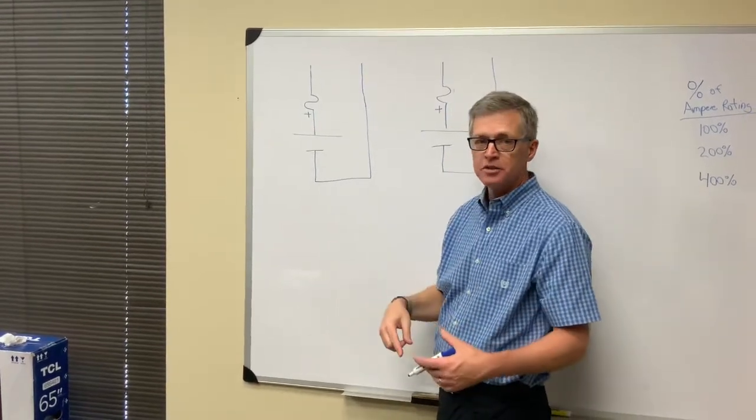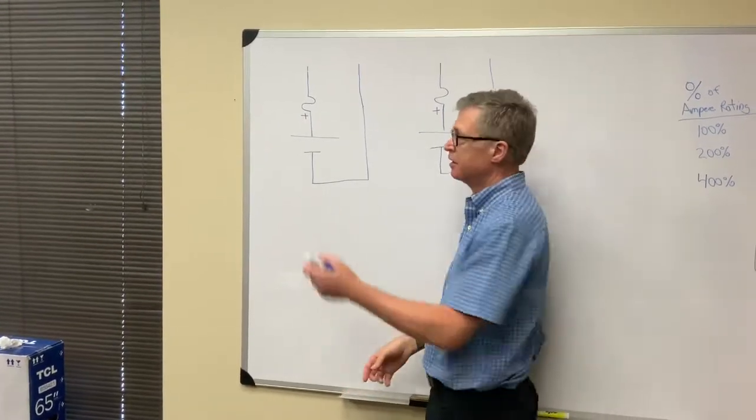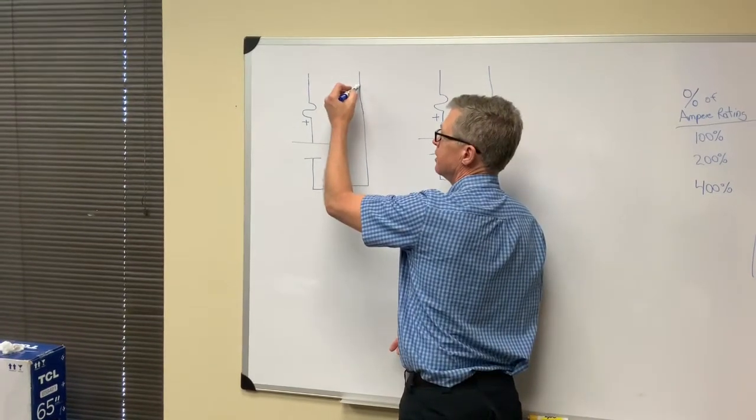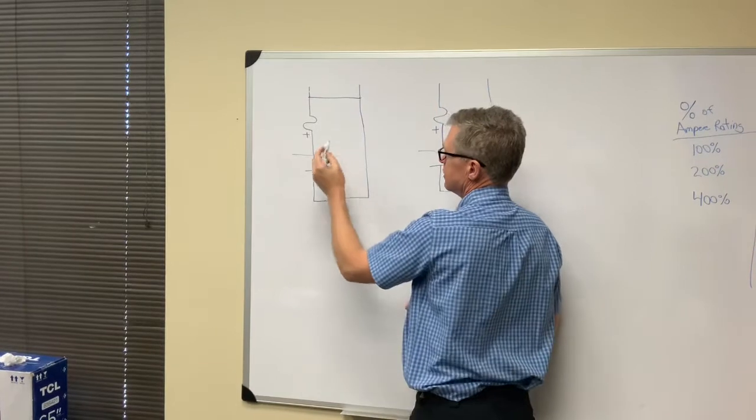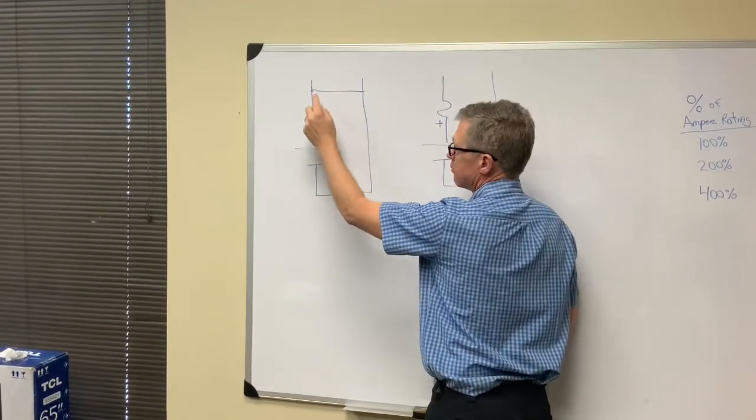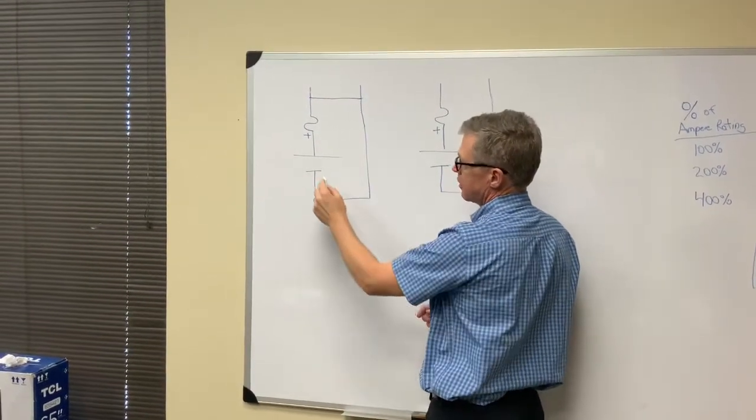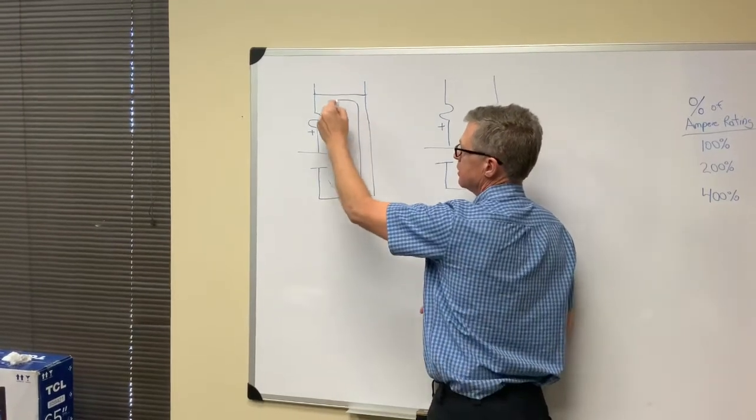you basically have a pathway that goes between the negative and the positive. So, you have an uninterrupted path for the current to flow like this.